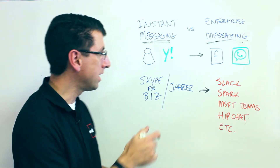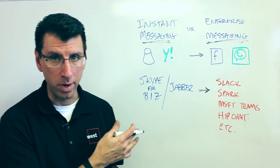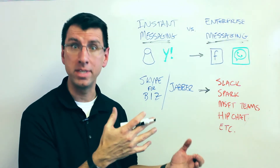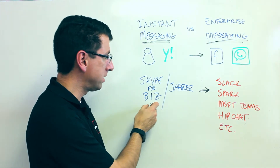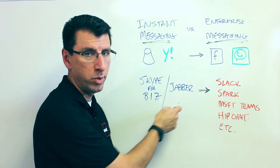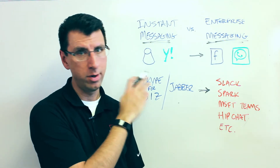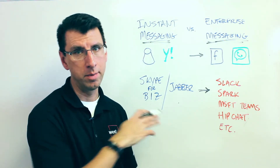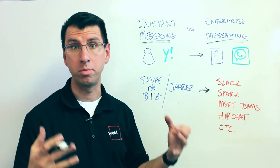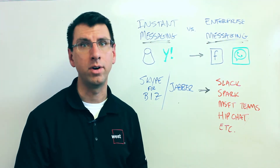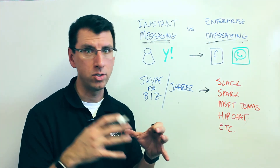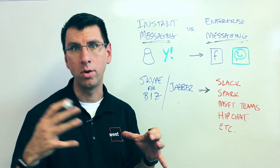That same thing is happening in the enterprise world. You've got Skype for Business and Jabber, which are still around and going to be around for a long time — instant messaging and presence platforms. A lot of times it's IM and P: instant messaging with presence, so you know the person is there and you can send them a message.